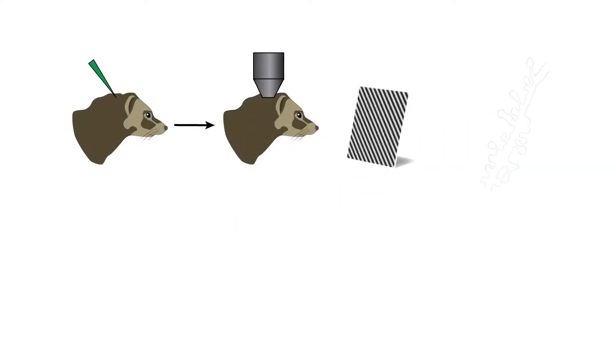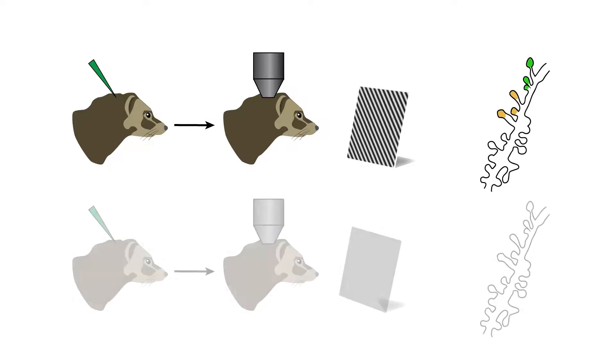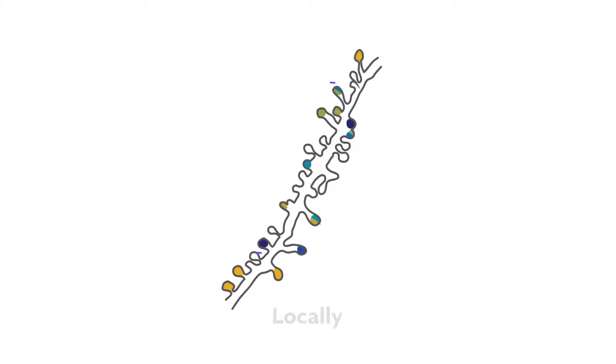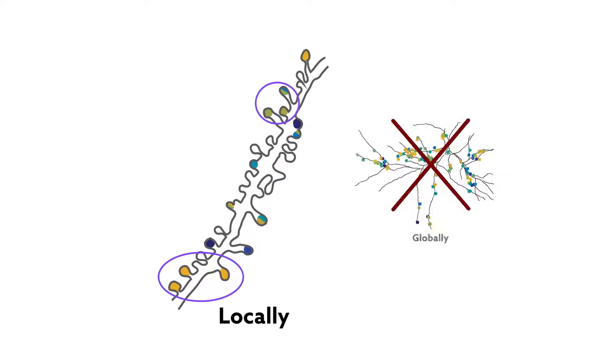The team also observed local clustering when they showed other types of visual stimuli or when neurons responded spontaneously in the absence of visual stimulation, suggesting that this phenomenon is a common property of how neurons connect with one another and process a variety of sensory information. These findings demonstrate that synaptic inputs in the visual cortex are locally, but not globally, organized.